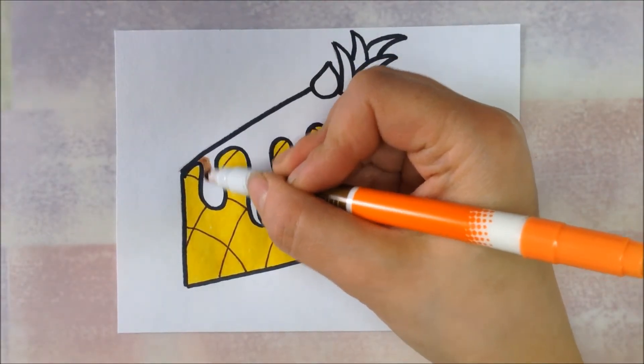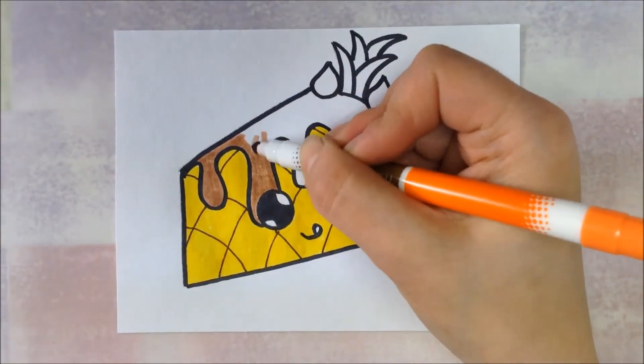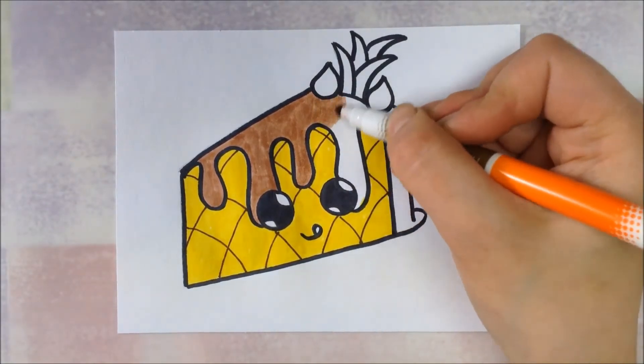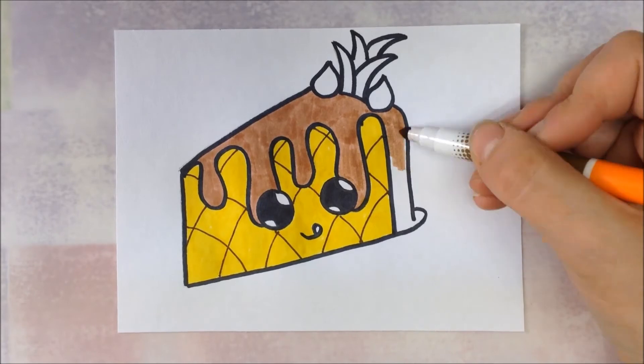For the frosting, I'm going to use brown. You could use green if you wanted to. I just use brown because it matches the lines on the pineapple, and I'm going to use green in a little bit.